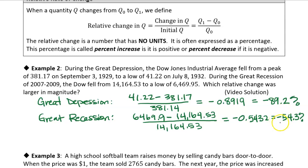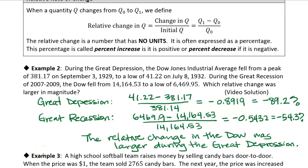So let's see. To answer the question, which was larger magnitude? The Great Depression was larger. All right. So that's our first application of the relative rate of change.